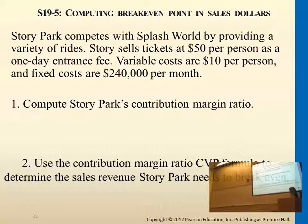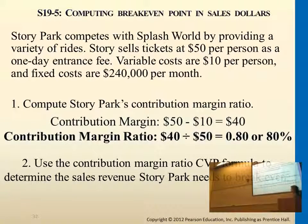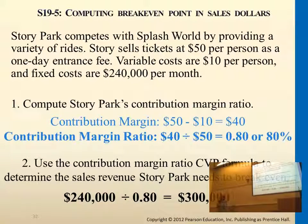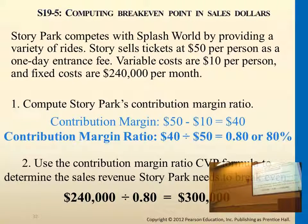It would be $300,000. So depending on the problems in the chapter, the homework, or different questions — if they ask you for break-even sales in units, you can use the shortcut formula. If they ask for sales in dollars, it's better to calculate the contribution margin ratio, as it's quicker to get to break-even sales in dollars.